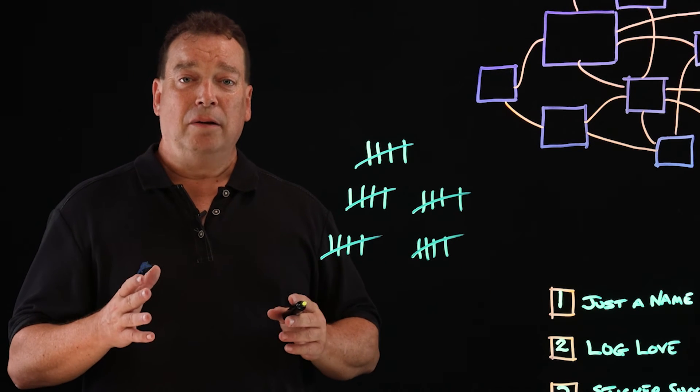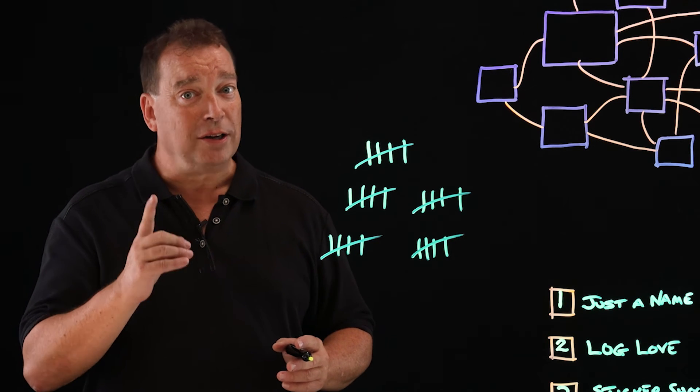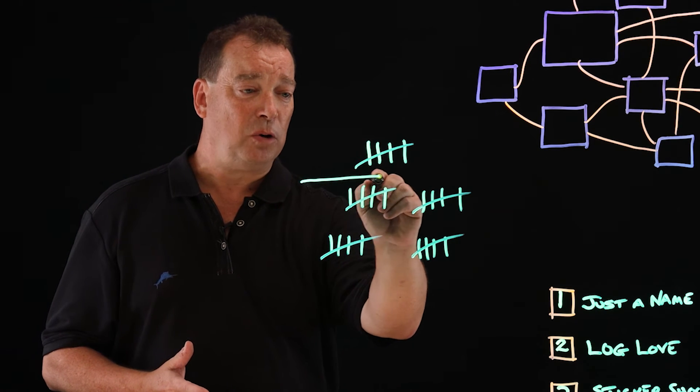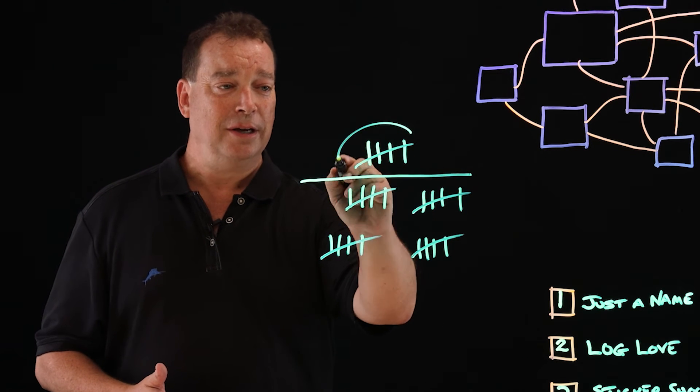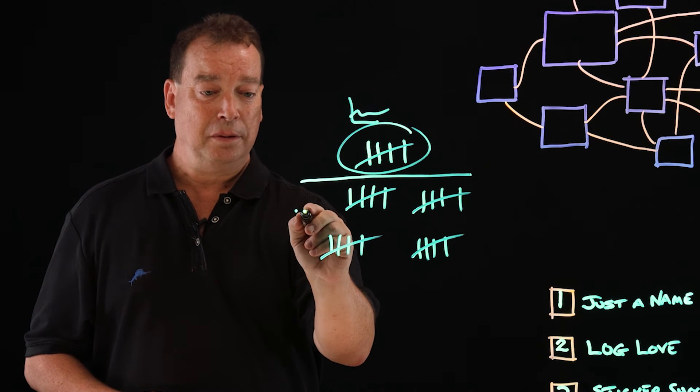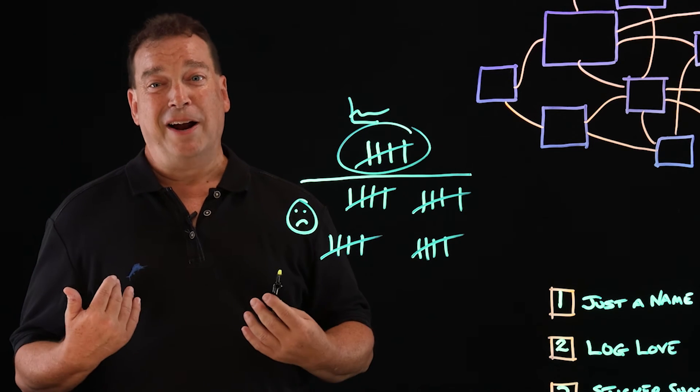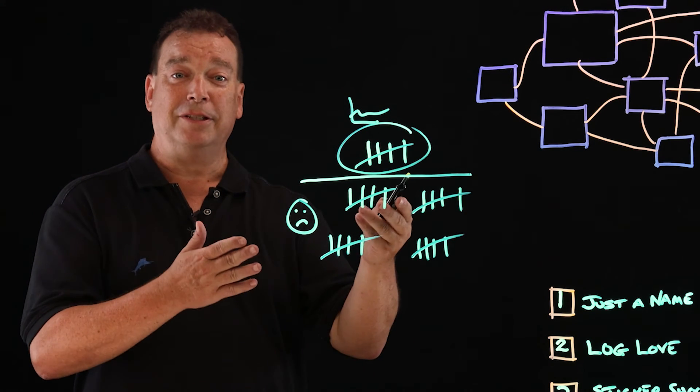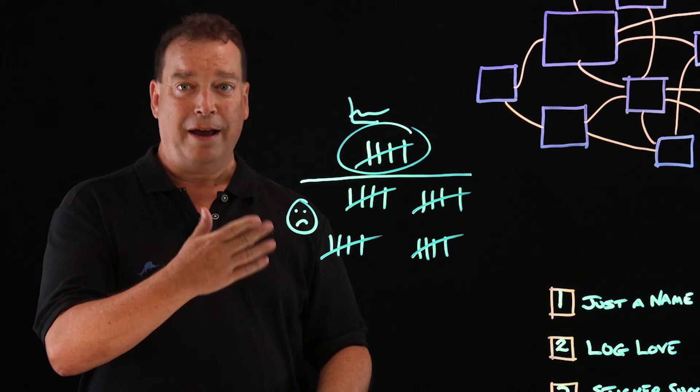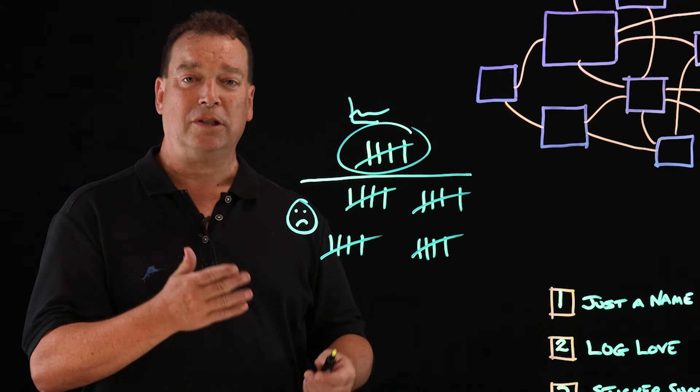So you usually have to draw a line and pick your favorite applications that you're going to monitor, and the rest don't get any monitoring at all. Why do I not like this? I don't like this because if you have an application, it's important to somebody, or as I like to say, every application is important to somebody.